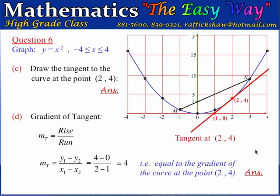The gradient of the tangent is 4 at this point, and so the gradient of the curve at this point is also 4. That's the end of part D and the end of question 6. We'll do question 7 in the next video.